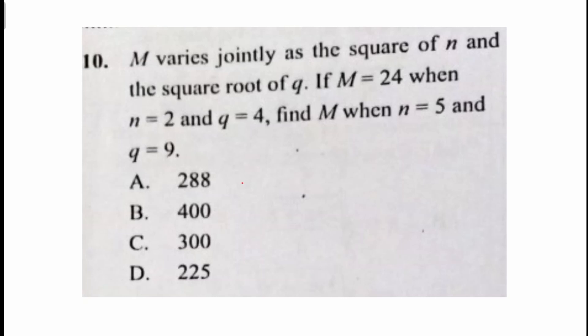The key things we would like to see here is the fact that M varies jointly as the square of n and the square root of q. This will help us write the relationship.